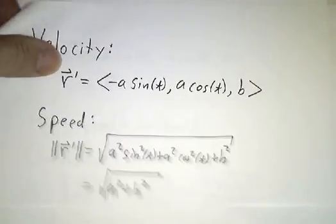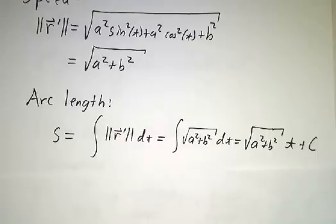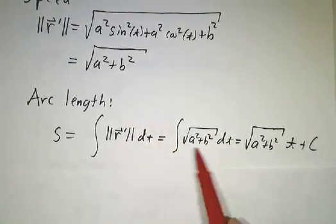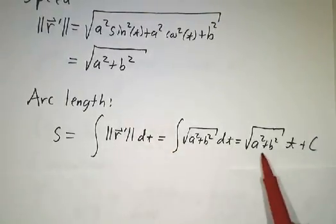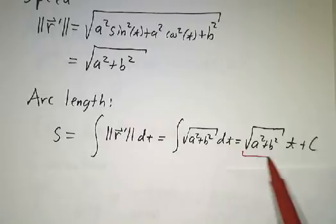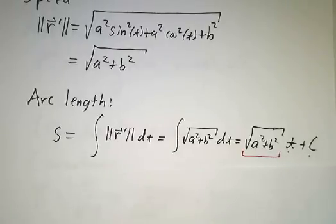Then we want to know the arc length. The arc length is just the integral of the speed. So we integrate the speed and we just get our speed times time plus a constant. Simple enough.